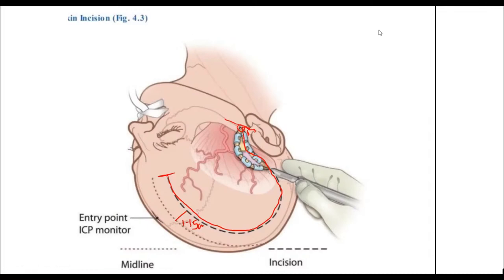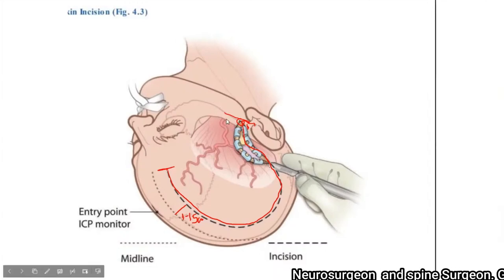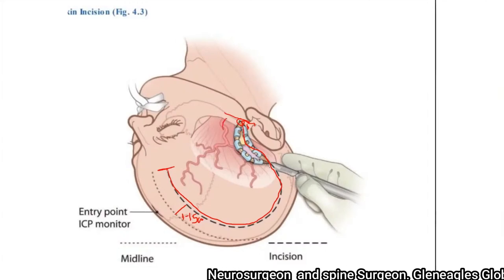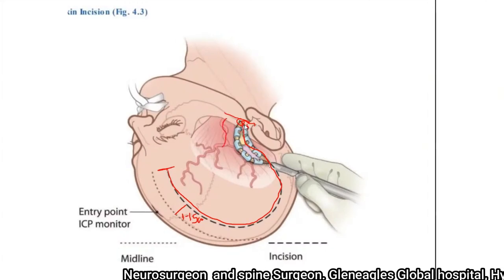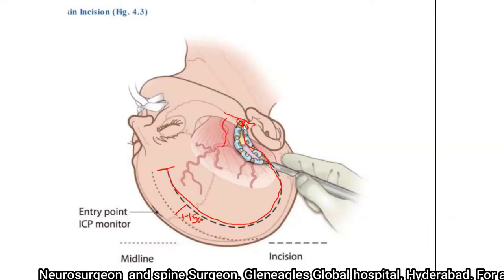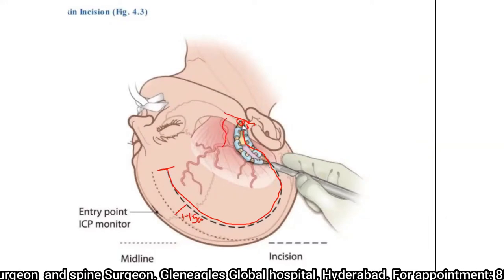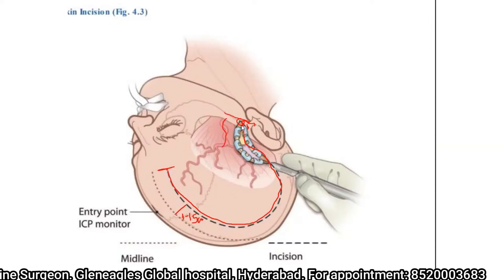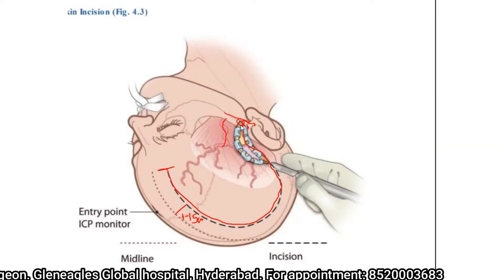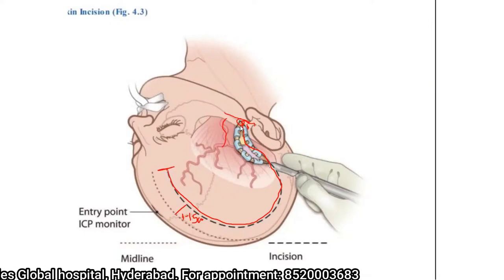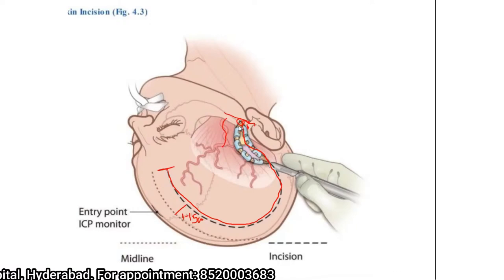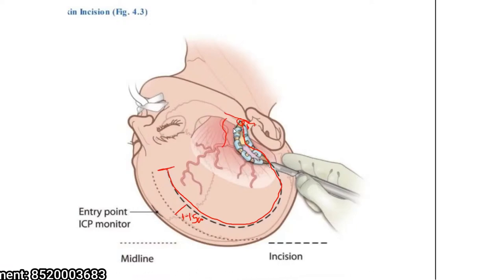One more precaution when taking the incision involves the superficial temporal artery. In the majority of cases, particularly when the patient is lean, you can palpate the superficial temporal artery. When designing an incision, take the incision in such a way that you spare the superficial temporal artery, as that enhances the viability of the flap.